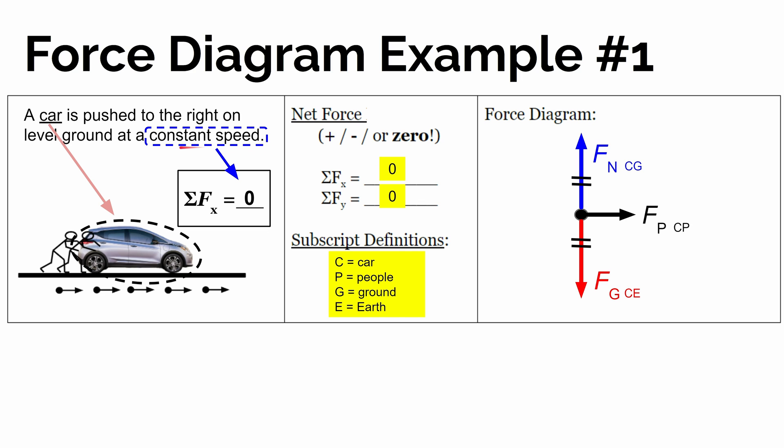Which means if there's a force to the right, there has to be at least one or more forces to the left to balance it out, so the sum of the forces is zero.